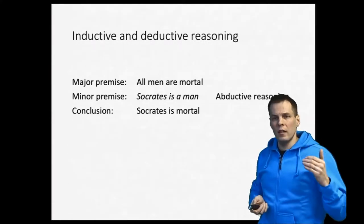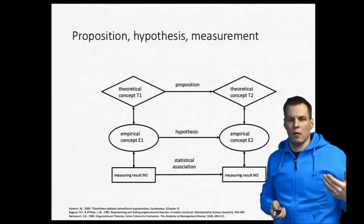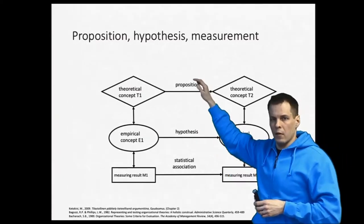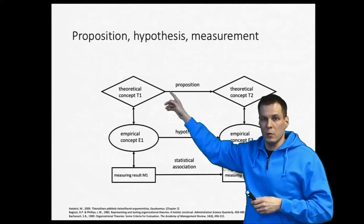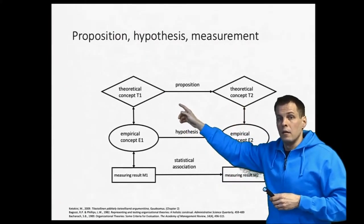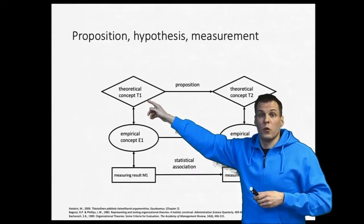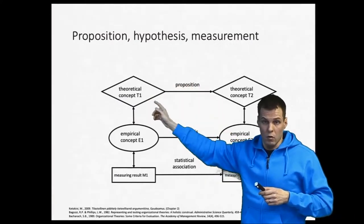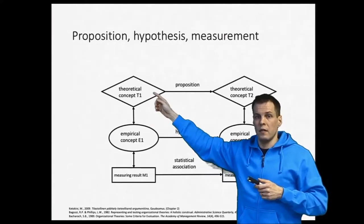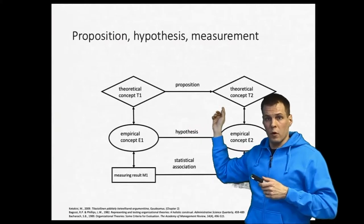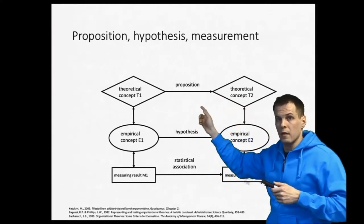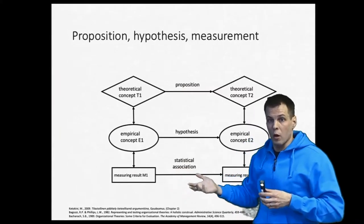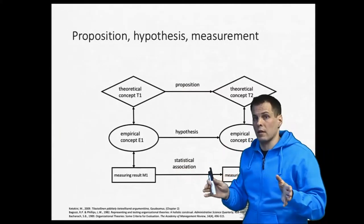Focusing on inductive and deductive reasoning, we have different levels of abstraction. We have theoretical concepts — we can use the term construct to refer to these. Then we have propositions: claims about relationships between theoretical concepts. For example, we can say that a company's CEO's gender causes profitability differences. Profitability difference and CEO gender are both theoretical concepts, and the proposition — the relationship between them — is part of a theory and summarizes its main claim.